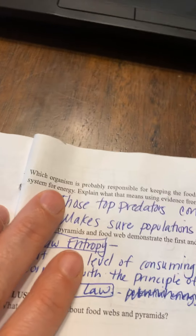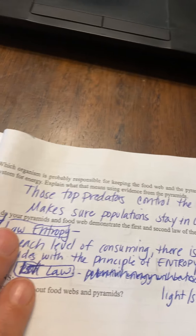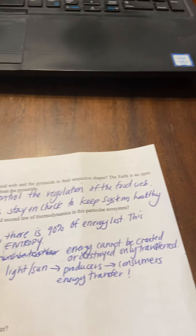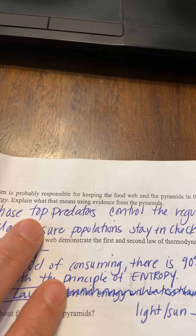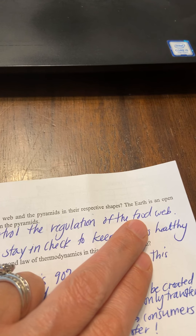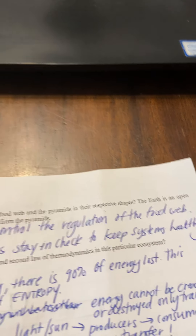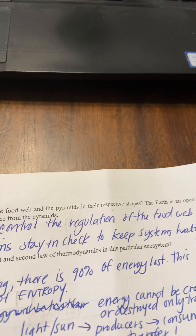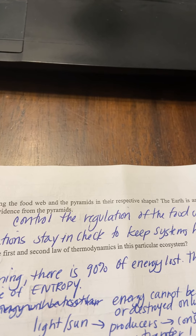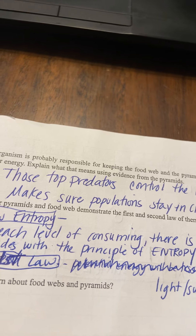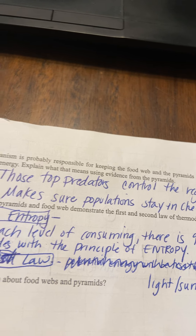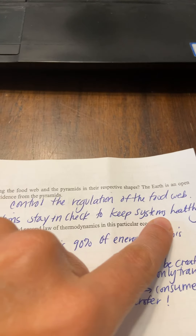Which organism is probably responsible for keeping the food web and the pyramids in their respective shapes? Those top predators — such as wolves and owls — control the regulation of the food web. If you do not have a suppression or control of those primary consumers, they can overeat the producers and cause big issues. So we have to control those primary consumers to control the entire food web. It makes sure those populations stay in check to keep systems healthy.